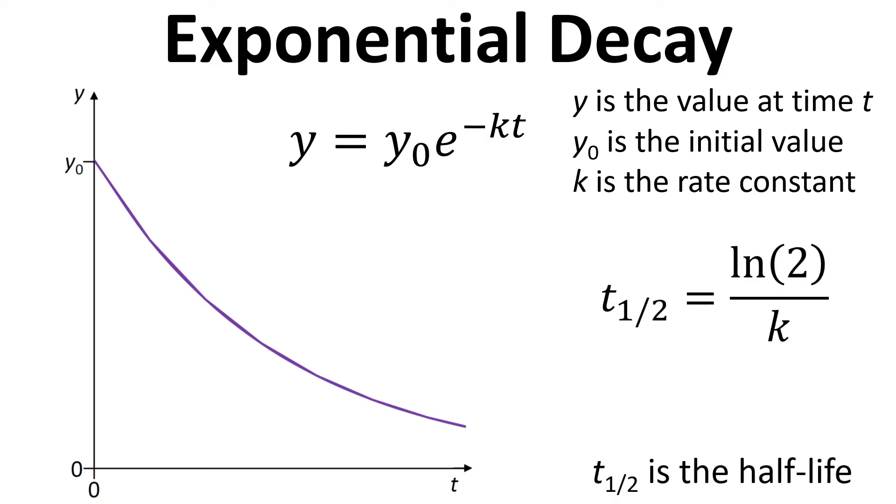So for the half-life which is what the question is asking about we need to use the equation shown here: t half, which is the half-life, equals natural log of 2 divided by k.